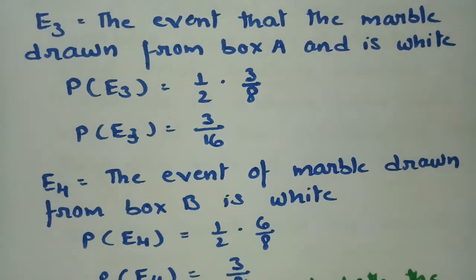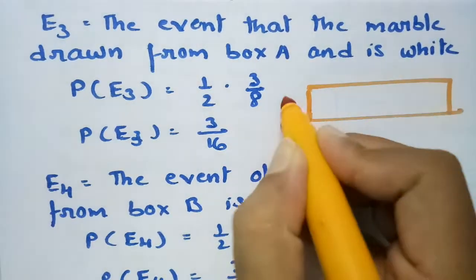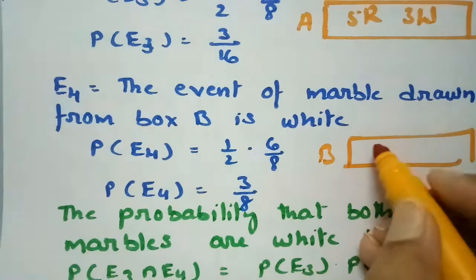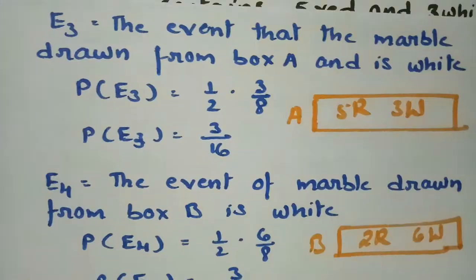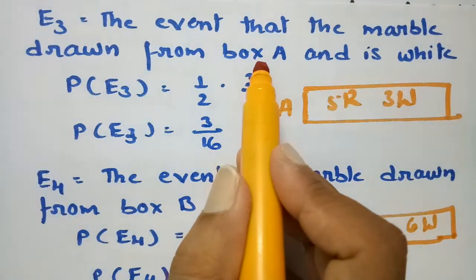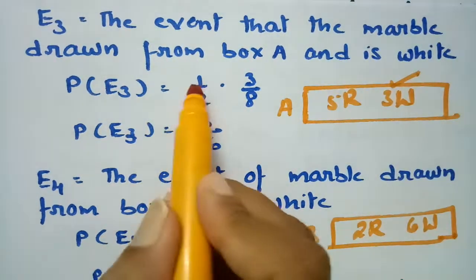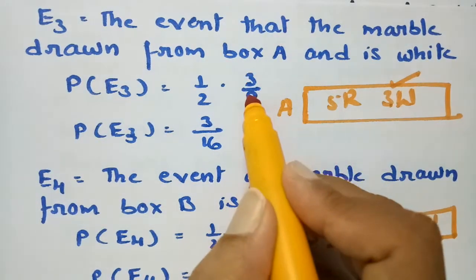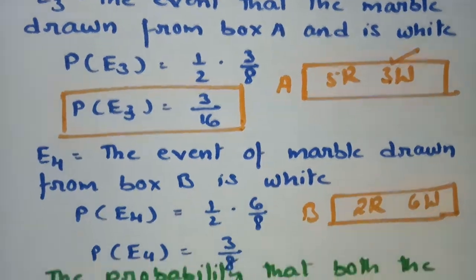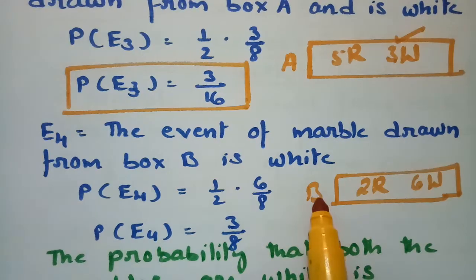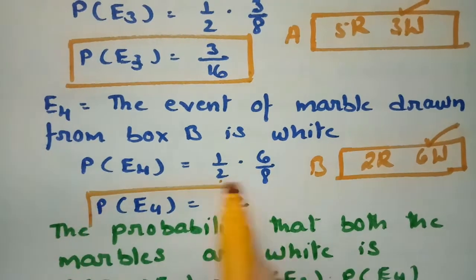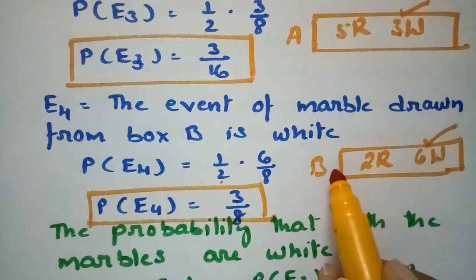Now for white. Event E3: the marble drawn from box A is white. Box A has 3 white and 8 total. P(E3) = 1/2 × 3/8 = 3/16. Event E4: the marble drawn from box B is white. Box B has 6 white and 8 total. P(E4) = 1/2 × 6/8 = 3/8.